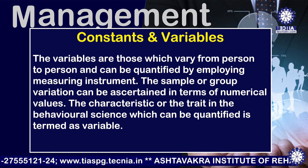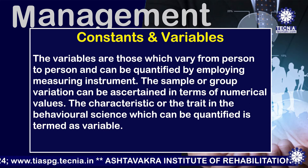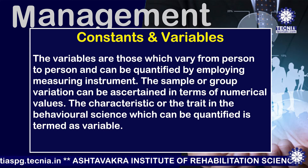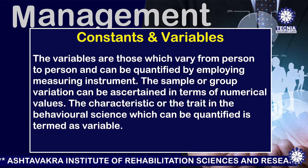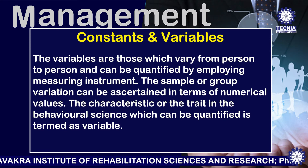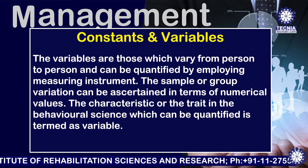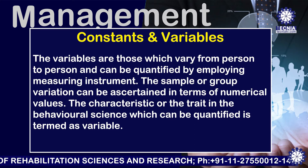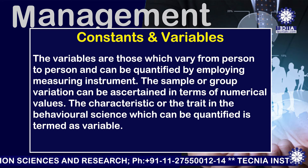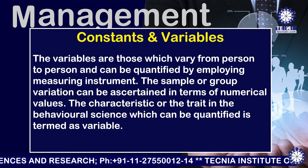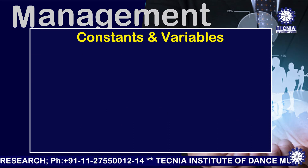What are variables? Variables are those which vary from person to person and can be quantified by employing a measuring instrument. The sample or group variations can be ascertained in terms of numerical value. The characteristic or trait in behavioral science which can be quantified is termed as a variable.